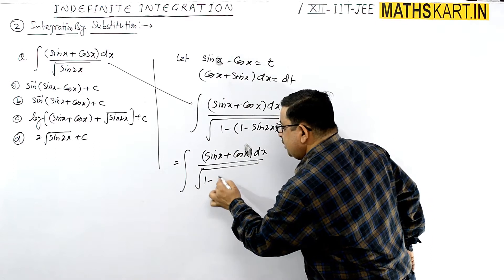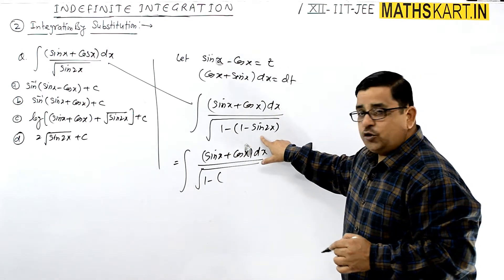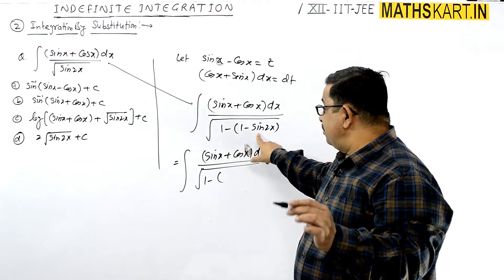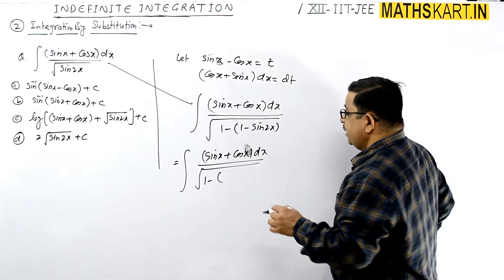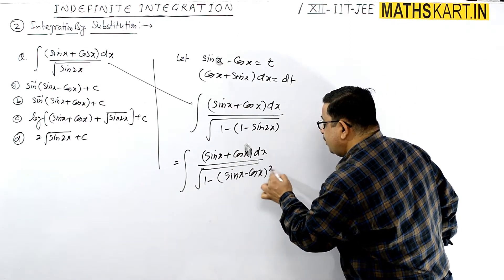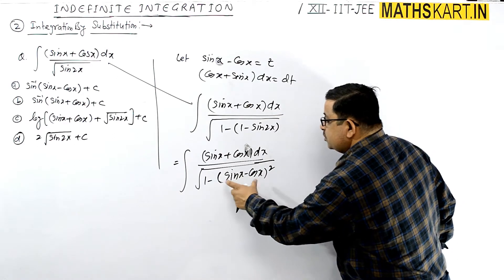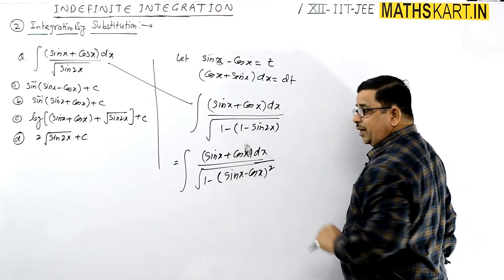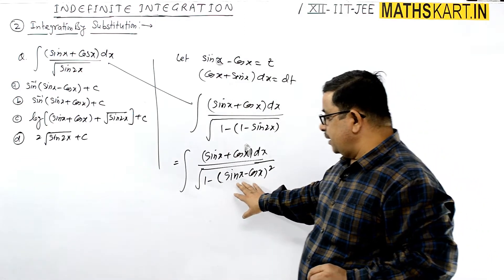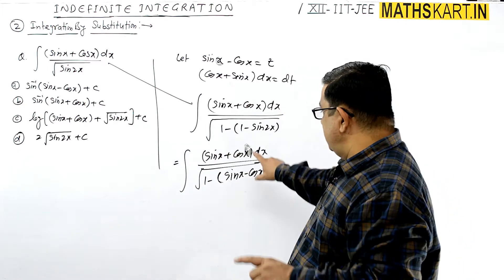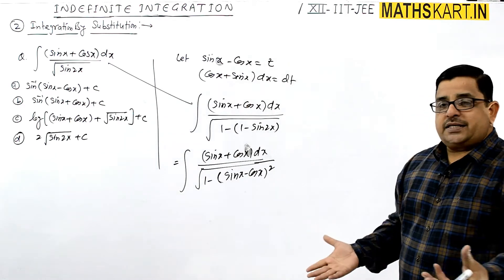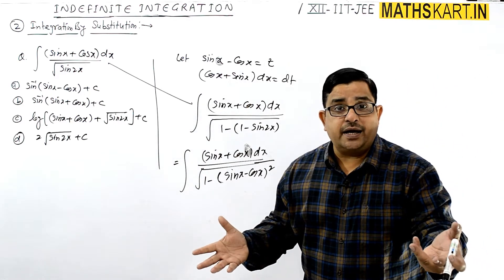Here the value 1 minus sin 2x can be written as sin²x + cos²x minus 2 sin x cos x, which is (sin x minus cos x) whole square. So this value is (sin x minus cos x)². Opening it gives sin²x + cos²x minus 2 sin x cos x. So that is the value — and now everything is clear.